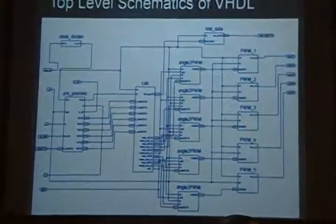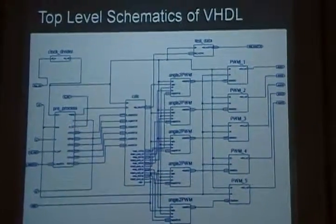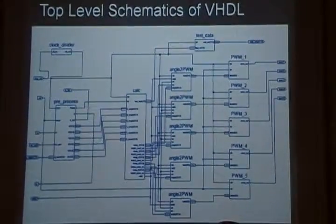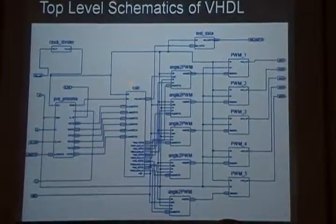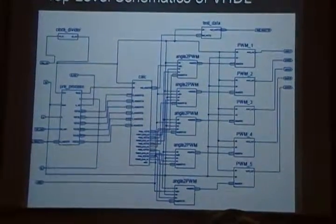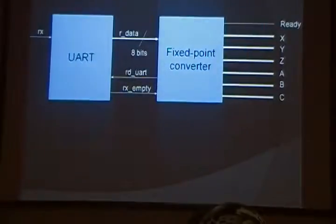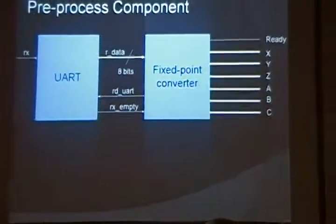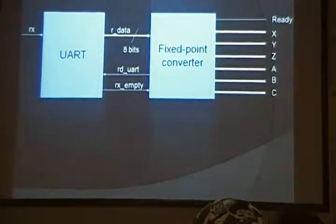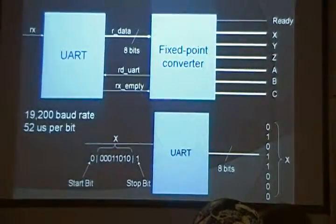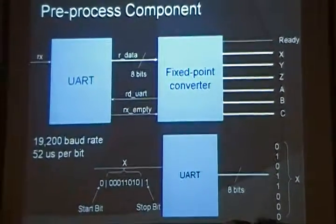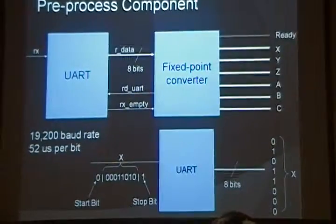Here is the top level kinematics of the VHDL code that we had. It's divided into three major components. We have pre-process, calculation, and post-process. Inside the pre-process, we have UART and fixed-point converter. The UART is the serial to parallel UART, and it's operating at 19,200 baud rate. It takes the bits and reassembles into a byte and gives it to the fixed-point converter.